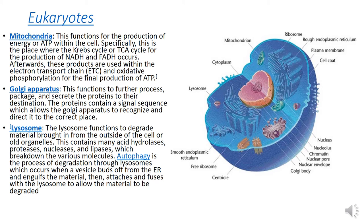These products are then used within the electron transport chain and oxidative phosphorylation for the final production of ATP. The Golgi apparatus functions to further process, package, and secrete proteins. Proteins containing a signal sequence allow the Golgi apparatus to recognize and direct them to the correct place.